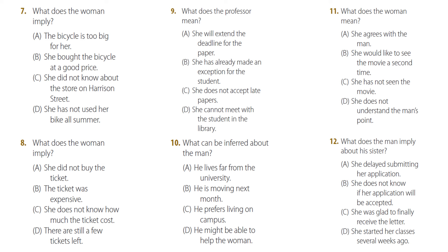Number seven. 'That's a great bike. Where'd you get it?' 'You know that sporting goods store on Harrison Street? They've been running tremendous sales all summer.' 'More than I could really afford. I had to dip into my savings.' What does the woman imply?